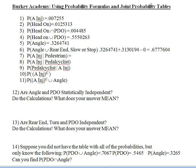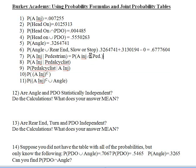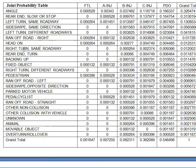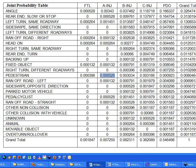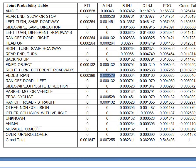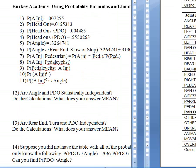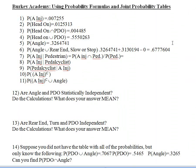To do a conditional probability, we need on the top the intersection of the two events: A injury and pedestrian. So what's the probability there was an A injury and a pedestrian involved? We divide that by the probability of what was given — that there was a pedestrian involved. Let's go to our table. The intersection of A injury and pedestrian is 0.000528, and the probability of a pedestrian involved is 0.000464.